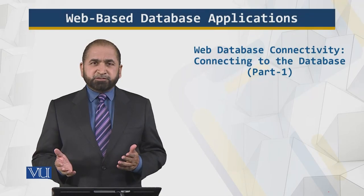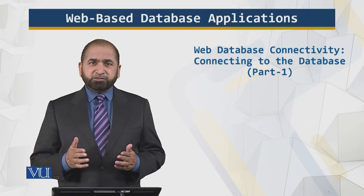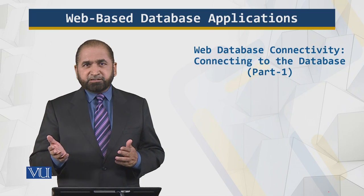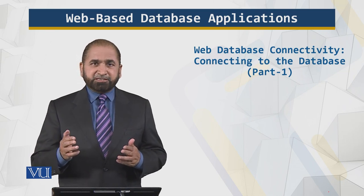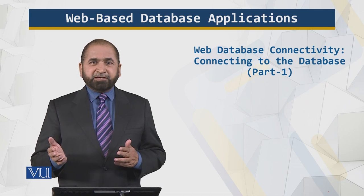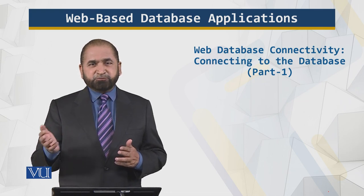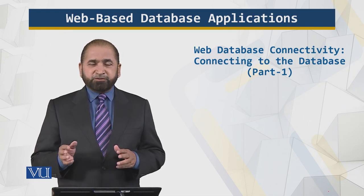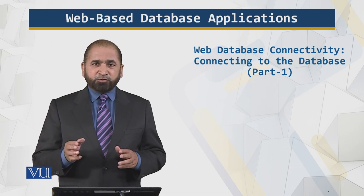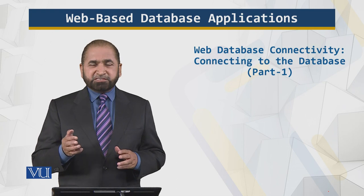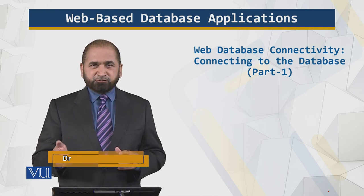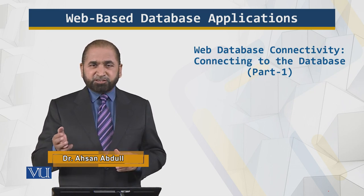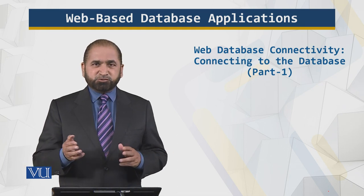In the previous modules, we talked about how the client communicates with the database, how it invokes an action, how it initiates something to access the database which is placed somewhere on the internet. Now in this module and in the next module, we'll go into some details about how things are actually happening — what CGI is doing, what is happening at the server, what technologies and tools are involved, other than just invoking. So that is spread across two modules.